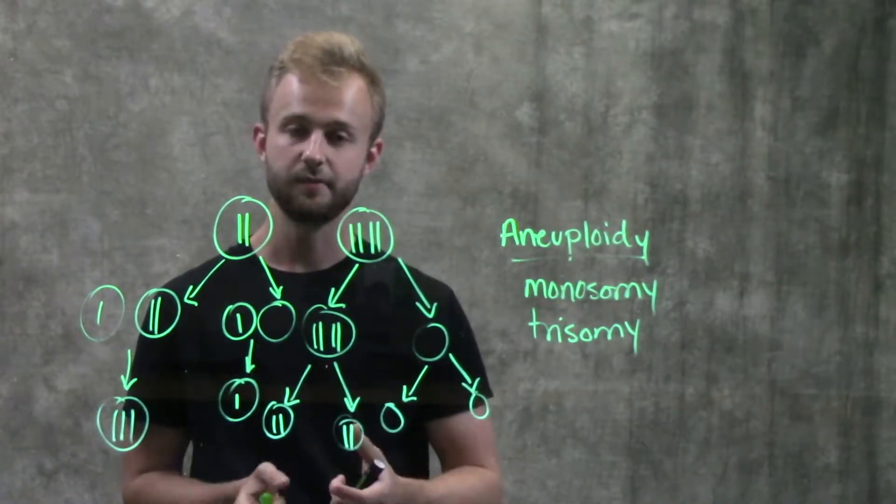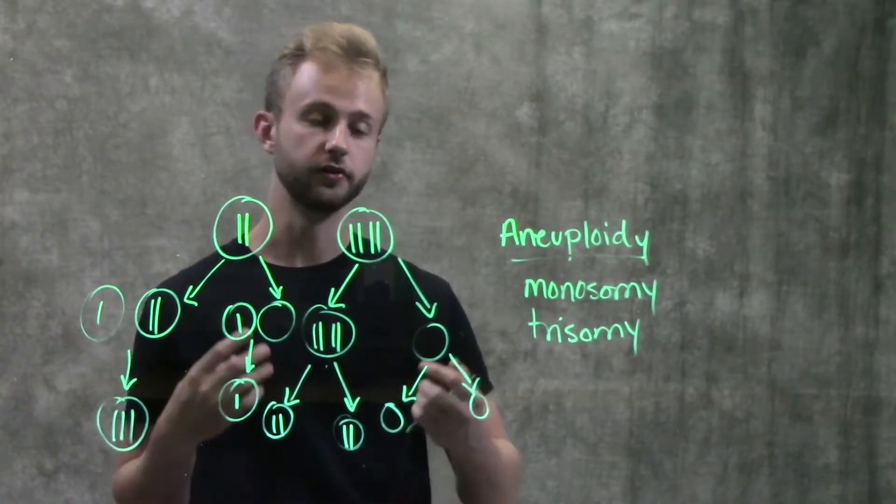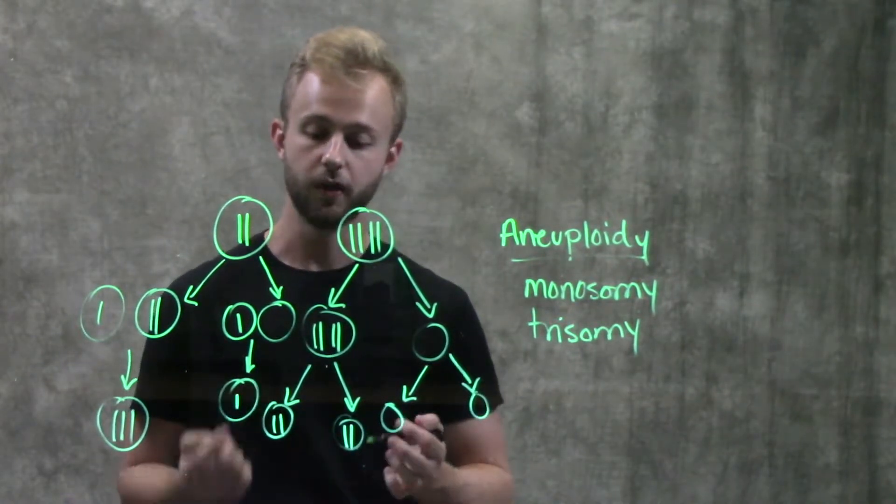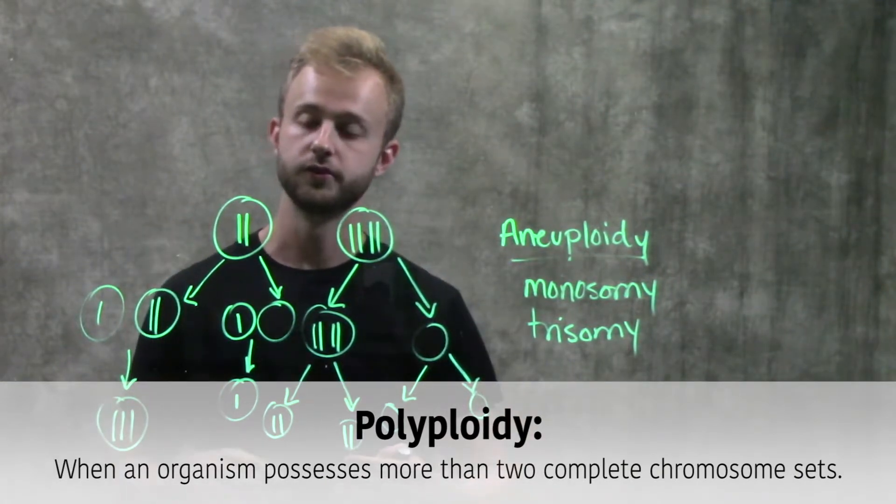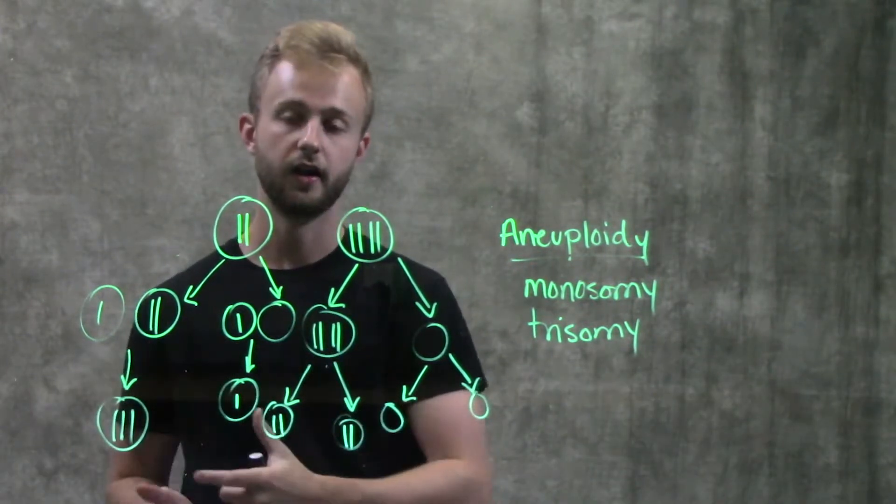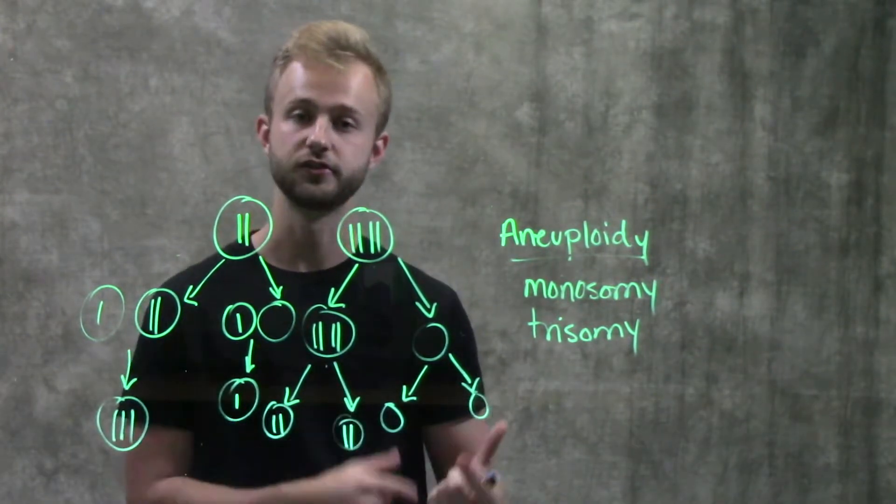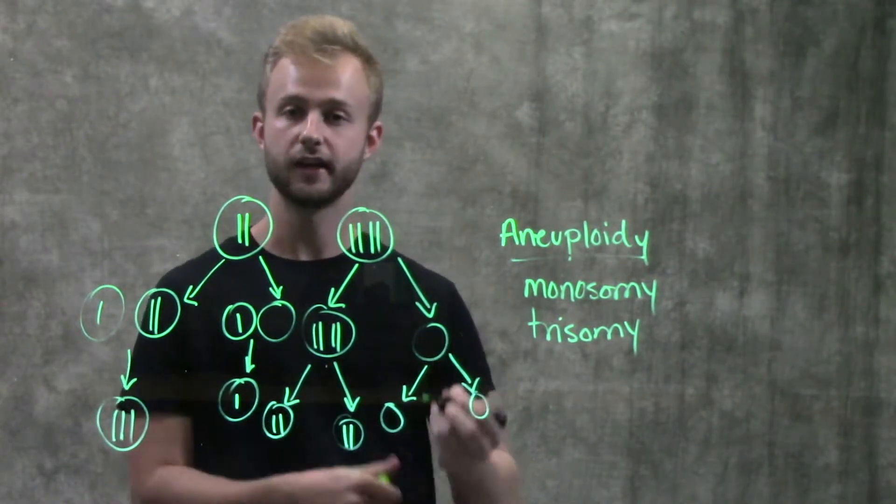And so this can happen actually in a much more severe way and give rise to something called polyploidy. So polyploidy is when all of the chromosomes, all of the homologous pairs, or all of the sister chromatids fail to separate during either anaphase one of meiosis or anaphase two. And so you get into situations where you have tetraploidy.